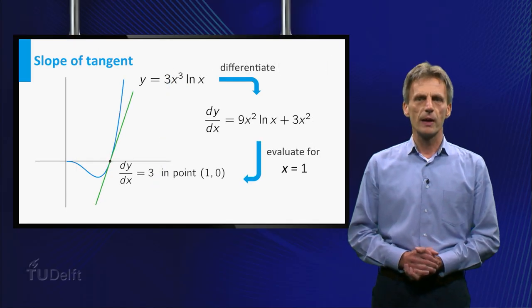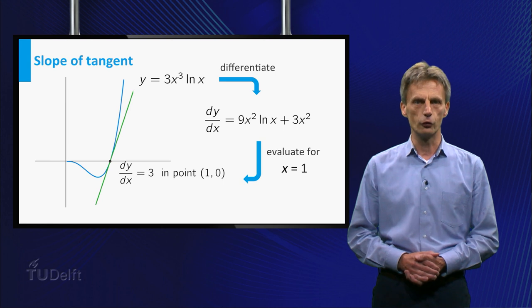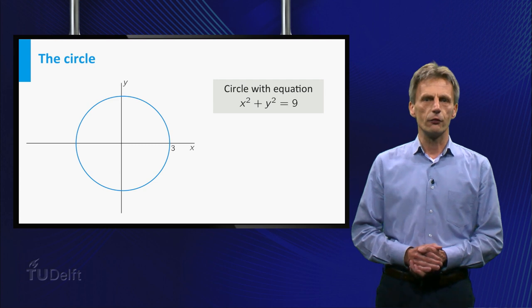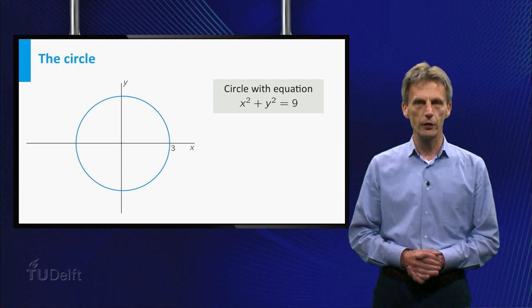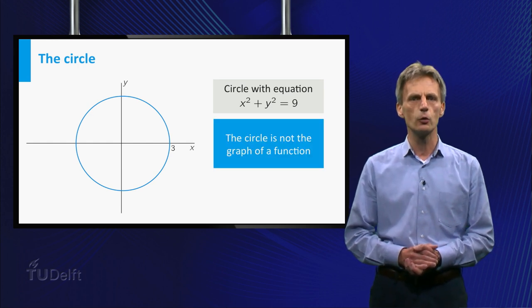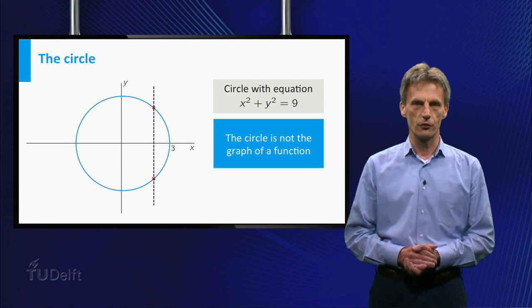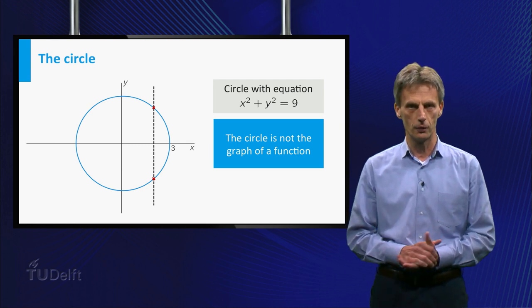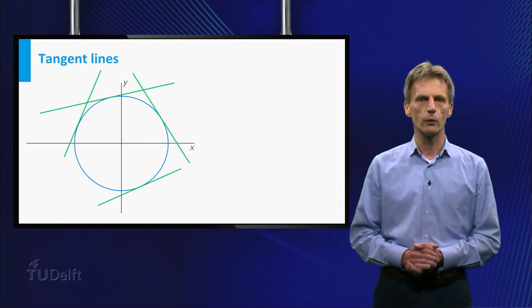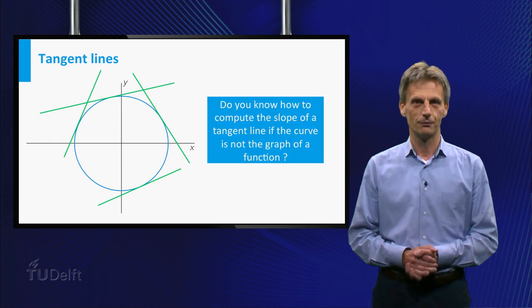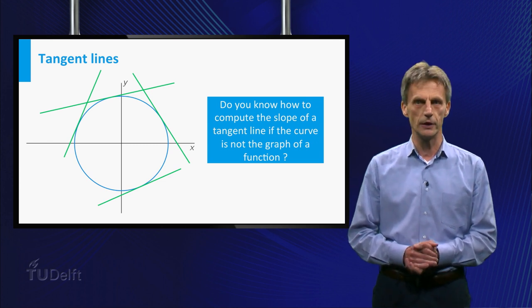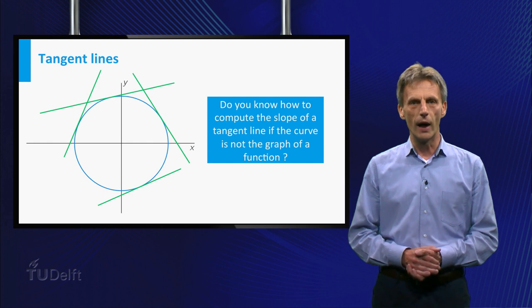Now let's change our perspective by considering curves that are not the graph of a function. Have a look at this example: the circle with radius 3 and center at the origin. This is a well defined curve in the plane, but it is not the graph of a function, as you can see by looking at the vertical line shown here, which intersects the circle at two separate points.